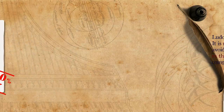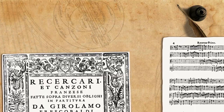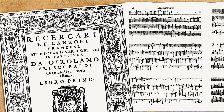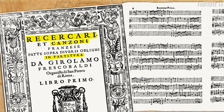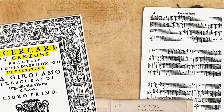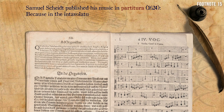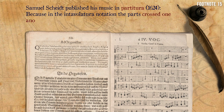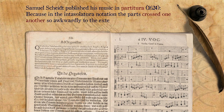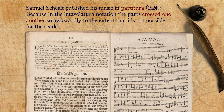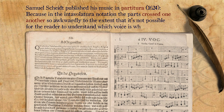Seeing the difficulties of the Italian intavolatura in conveying the individual voices, it is easy to understand why genres with complicated counterpoints such as Ricercari and Canzoni were mostly printed in partitura — a full score. The German composer Samuel Scheidt, who published his music in partitura format, wrote that he did so because in the intavolatura notation the parts crossed one another so awkwardly that it's not possible for the reader to understand which voice is which.